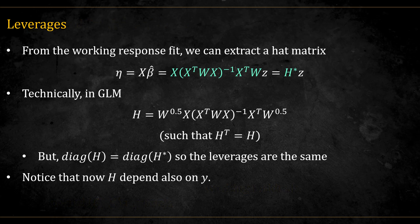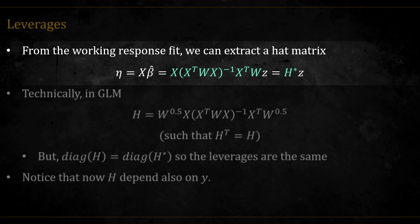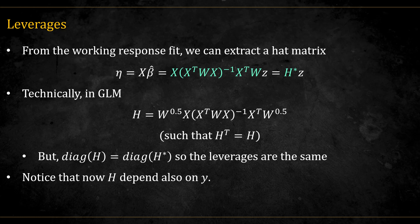We can also use this approach to get the GLM equivalent hat matrix and leverages. Developing the linear predictor using the IRLS and the working response form, we get this. We can treat this matrix as the hat matrix, and take the diagonal to be the leverages. Technically, in order for the H matrix to also be symmetrical, in GLM it is defined like this. But the diagonals of the two matrices are equal, so the leverages are the same. Notice also that unlike linear models where H only depended on x, here it also depends on the y through the w's. These leverages are again used to determine how much each observation has in determining the regression line.